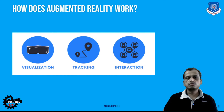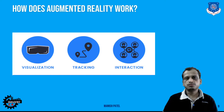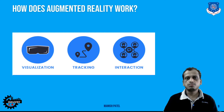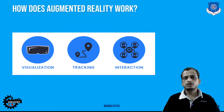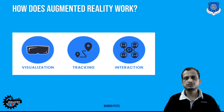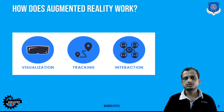How does augmented reality work? It is based on three factors. Starting with visualization — you get a view based on sensors, and then tracking based on sensing technology. GPS trackers and marker-based technology are used for tracking and visualization of the real world. You place virtual objects on top of the real world based on this, and then interact with the help of advanced sensing technologies.